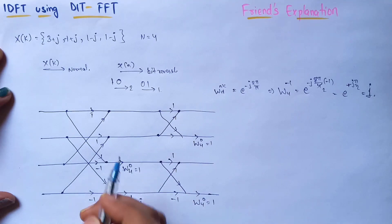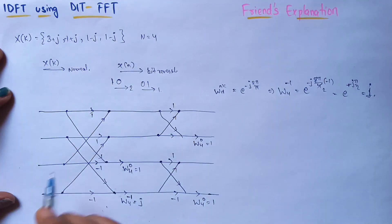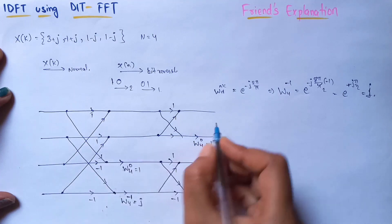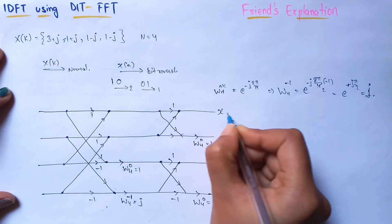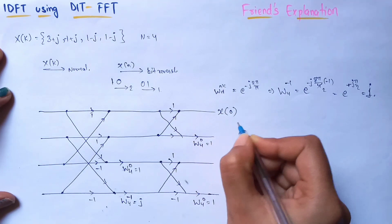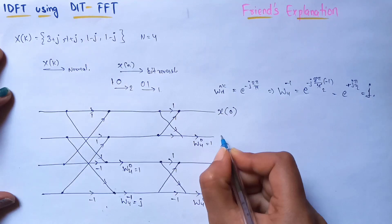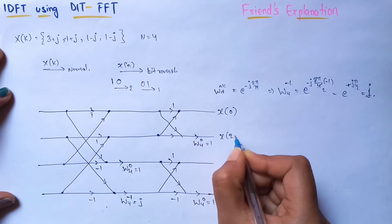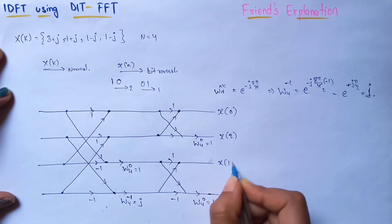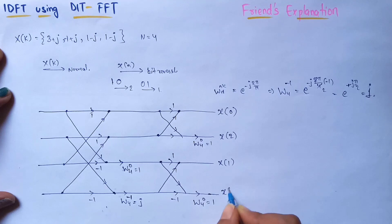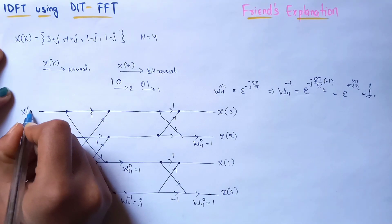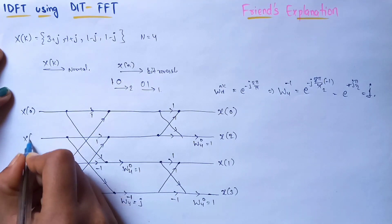In the previous video the time domain was on the left, but as it is inverse, the frequency domain inputs go on the left. The inputs X(k) are placed in normal index order: X(0), X(1), X(2), X(3). The outputs x(n) on the right will be in bit-reversal order: x(0), x(2), x(1), x(3).